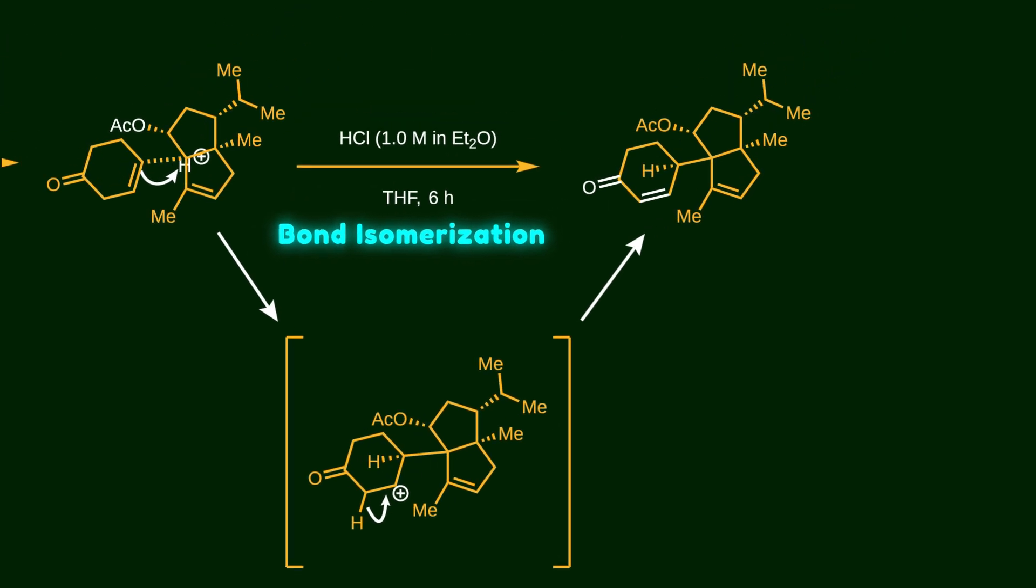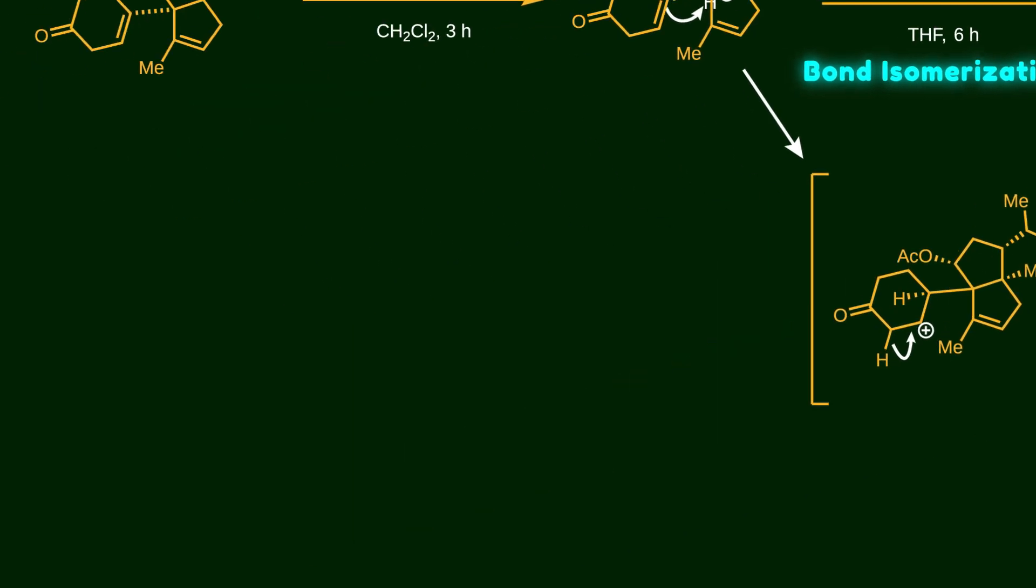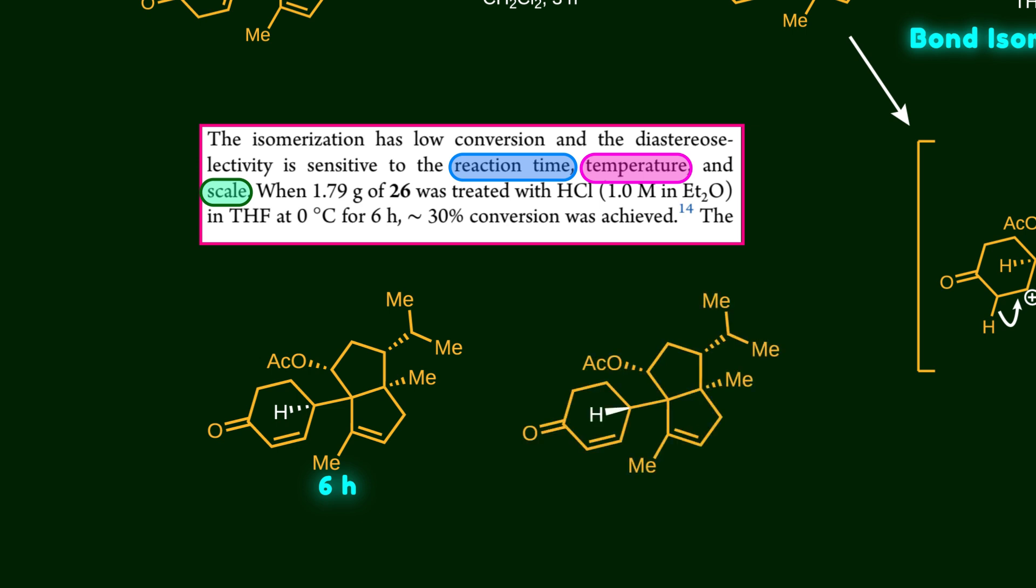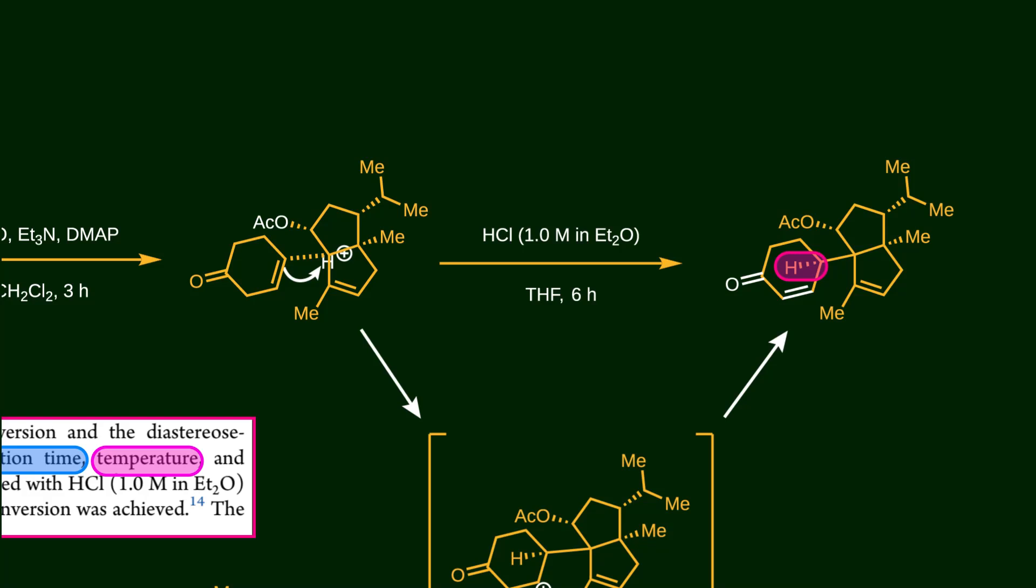Controlling the stereochemistry of this hydrogen is pretty challenging. The authors pointed out it depends on reaction time, temperature, and scale. The desired stereochemistry was achieved in just six hours, but if the reaction goes further, a different isomer is formed. So we can deduce that this product is the kinetic product, and if we allow more time, the thermodynamic product is formed instead. Because of the short reaction time, some starting material remains unreacted, so the recovered starting material was subjected to the same reaction conditions again. After two cycles, the desired product was obtained in 61% yield.